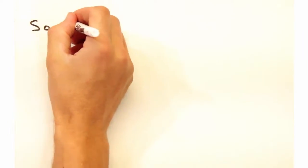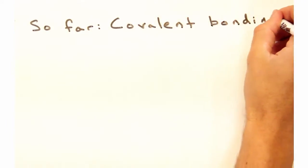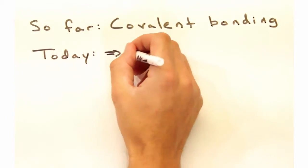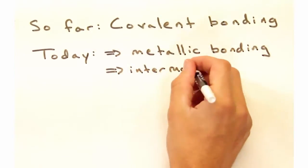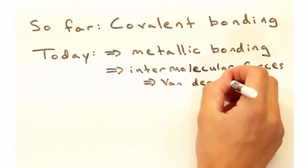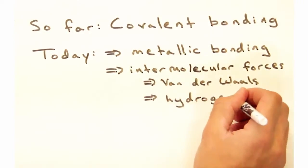So far, Nicole, you and I have explored covalent bonding. But there are, of course, other types of bonds that exist. Today we're going to introduce two general categories of bonding, the first being metallic bonds, and the second, intermolecular forces such as van der Waals and hydrogen bonding, and look at what drives these interactions.